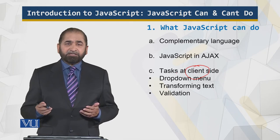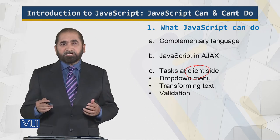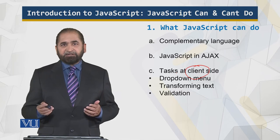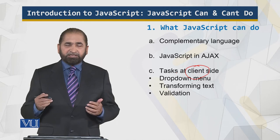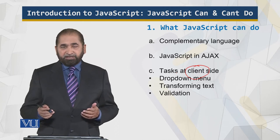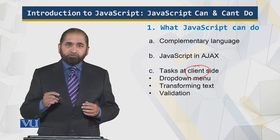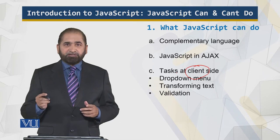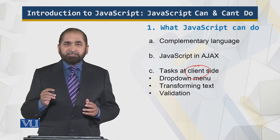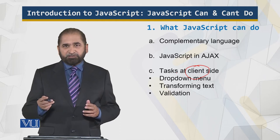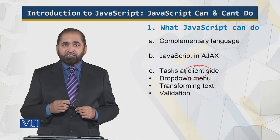JavaScript can be used for transforming text at the client side — adding font colors as per the liking of the client and so on. And validation also: whatever is supposed to be entered in a certain field is validated. For example, if an email has to be entered in a field, it is checked that it is indeed an email and not a date of birth or something else. These are the things which JavaScript can do.